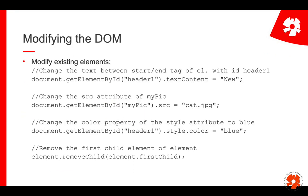That's one example of how you access the document object model and access elements in your browser that are displayed. But you would like to change them too. There are different ways to do that. For example, you can say .textContent - that's the text between start and end tag - so if you have a header, you can change the header to something else. You could change attributes, for example the source attribute of a picture so whenever I click a button I get a different picture. You can also change styling, for example the color property of a header, and you can remove elements using removeChild.